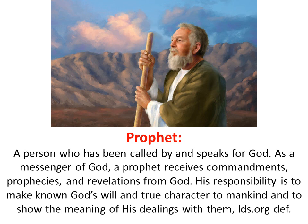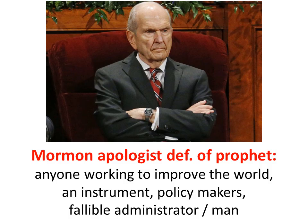The term 'prophet,' per the LDS.org definition, is a person who has been called by and speaks for God. As a messenger of God, a prophet receives commandments, prophecies, and revelations from God. His responsibility is to make known God's will and true character to mankind. But as Joseph Smith gets in trouble and his prophecies fail, Mormon apologists redefine the word 'prophet' to mean anyone working to improve the world, or just an instrument, a policymaker, a fallible administrator, or a man — sometimes he acts as a man, sometimes as a prophet.